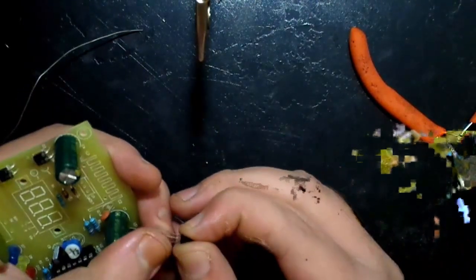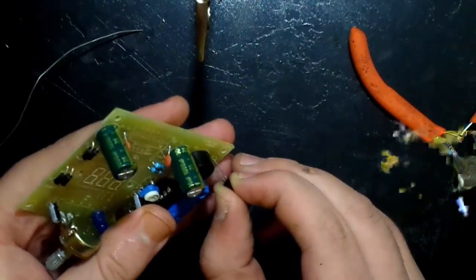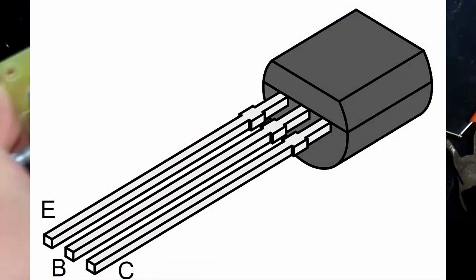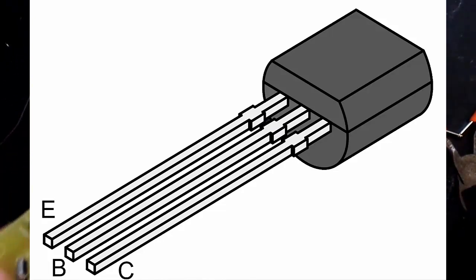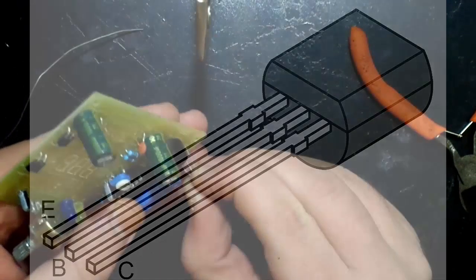The NPN transistor is next. Note where the emitter, base and collector gets plugged into. This image over here shows you where the emitter, base and collector is by the half moon shape of the emitter.